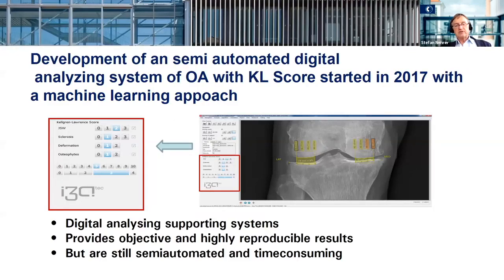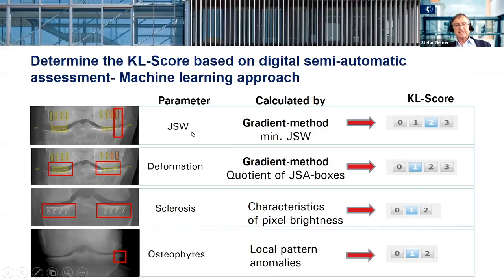The first approach we took was a machine learning approach. We taught the computer how to assess the Kellgren-Lawrence score by finding certain fixed measurement points for developing criteria — for the joint space area, deformation, sclerosis, and osteophytes. But if you define criteria, you always introduce subjectivity.